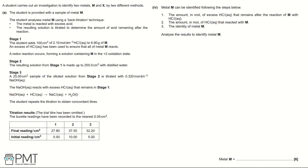Part 4: Metal M is identified by following three steps — finding moles of excess HCl, moles of HCl that reacted with M, then the identity of M. Key data: volume and concentration of HCl, mass of M, solution made to 250 cm³, 25 cm³ sample taken, titrated with 0.32 mol dm⁻³ NaOH. We use only the concordant results, so we first calculate the titers to determine which ones are concordant.